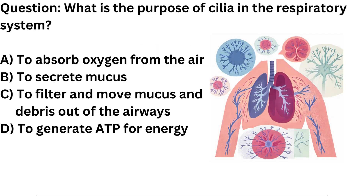Question. What is the purpose of cilia in the respiratory system? A. To absorb oxygen from the air. B. To secrete mucus. C. To filter and move mucus and debris out of the airways. D. To generate ATP for energy.